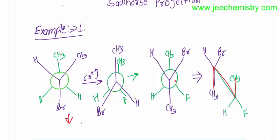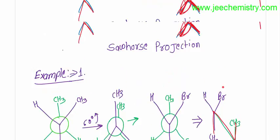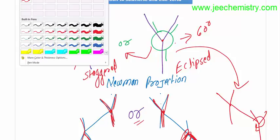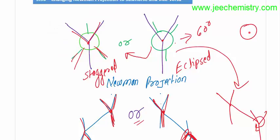Now, the structure can be drawn. From the moment we are getting a Sawhorse format — so if you are getting an eclipsed conformation, then just change the eclipsed conformation to a staggered conformation by a 60-degree rotation. If you rotate 60 degrees, then you are getting the same structure. If you rotate the front carbon by 60 degrees, this will come to this position, and this will come to 120 degrees. If you rotate 180 degrees, this will come to this position. If you rotate 120 degrees or 180 degrees — a 180-degree rotation is just the opposite.